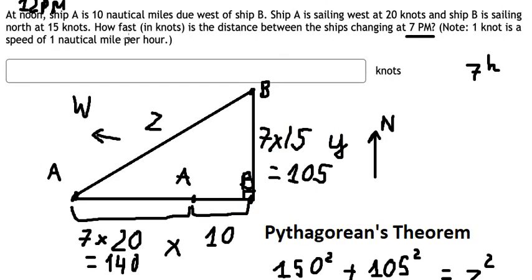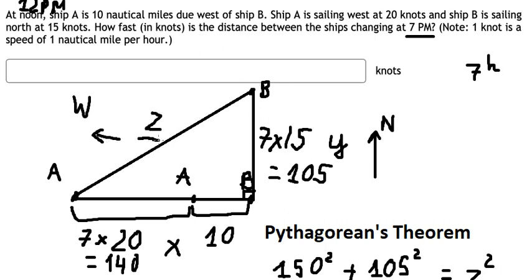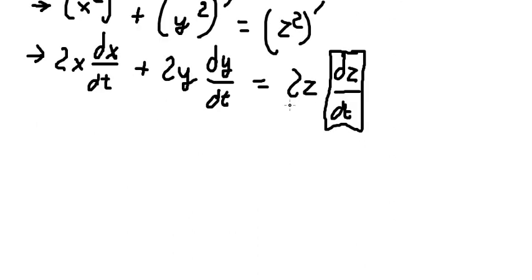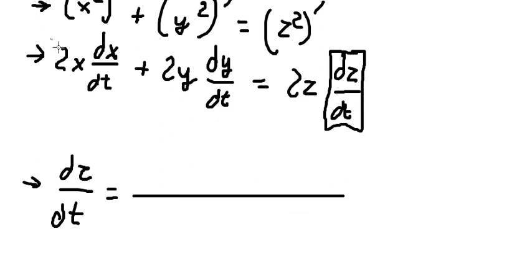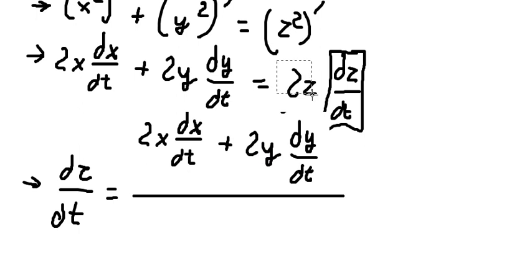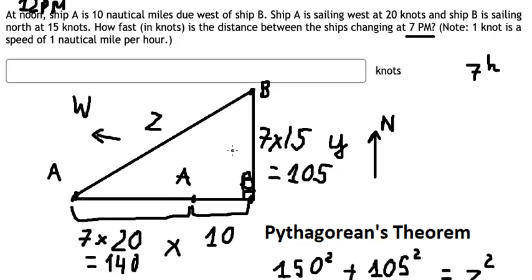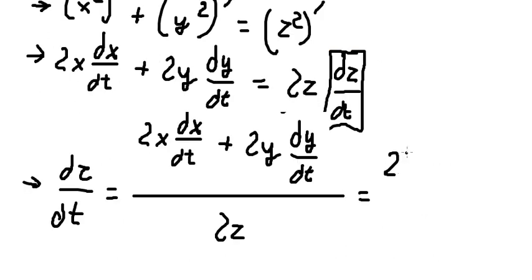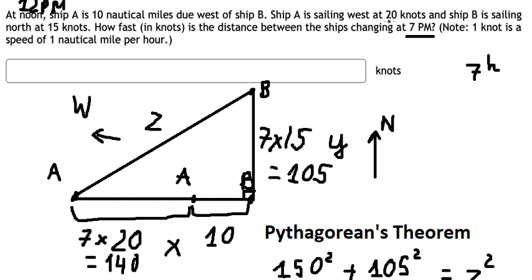The question wants to find how fast the distance is changing — that is dz/dt. So we need to divide both sides by 2z, and we get the formula for dz/dt. Now for x, that is about 150, and x times dx/dt: for ship A, dx/dt is about 20 knots.